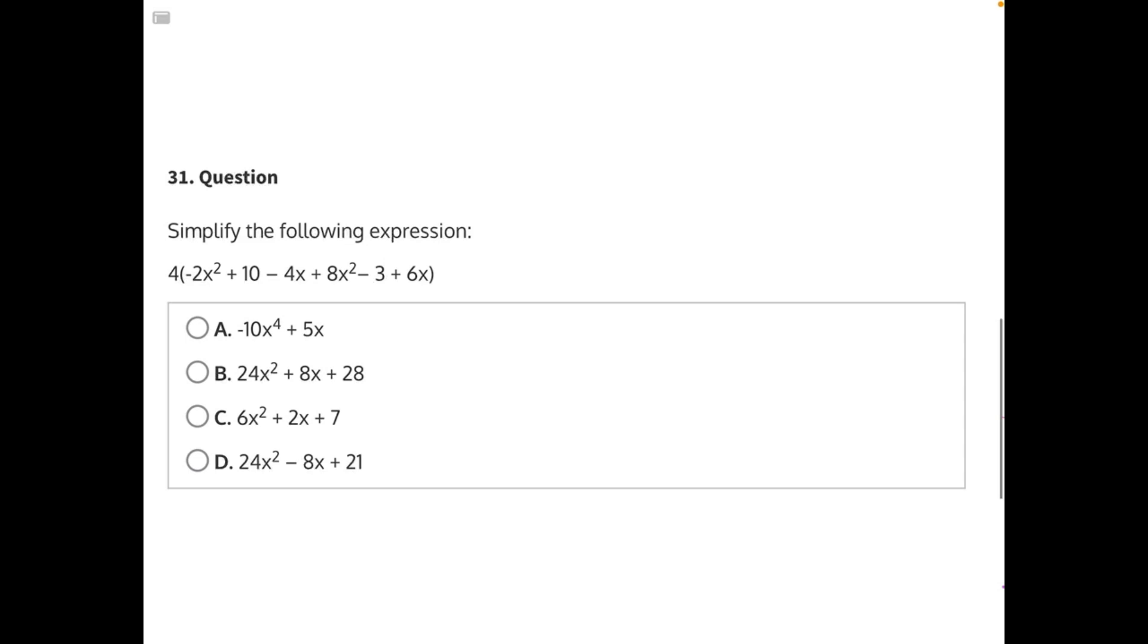Simplify the following expression: 4 times negative 2x squared plus 10 minus 4x plus 8x squared minus 3 plus 6x.